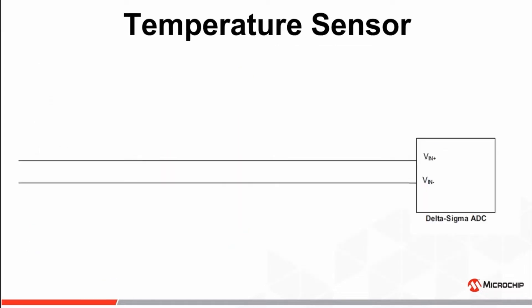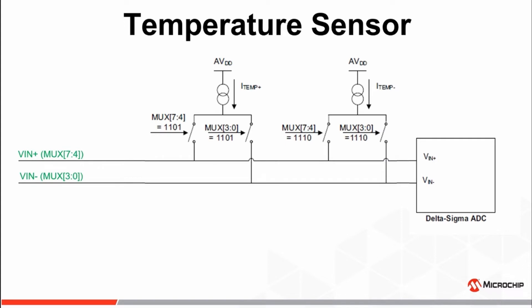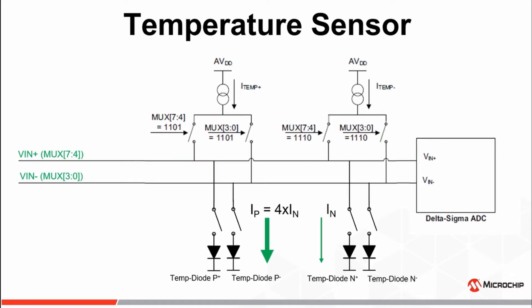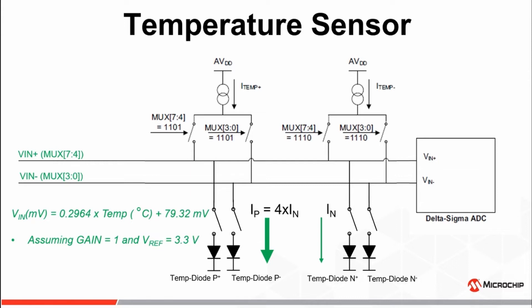Let's take a look at a simplified view of the VIN-plus and VIN-minus input structure as related to the temperature sensor of the MCP386X devices. Note the current sources configurable via the MUX7-4 and MUX3-0 bits to bias the internal P-type and N-type temperature diodes. The P-type diode has a current density four times that of the N-type diode, and the difference in current densities of the two diodes yield a voltage that is a function of the absolute temperature. By simply configuring the MUX7-4 bits to connect the P-type diode to VIN-plus and the MUX3-0 bits to connect the N-type diode to VIN-minus, a difference voltage can be taken and plugged into the equation shown here and solved for the temperature in degrees C.